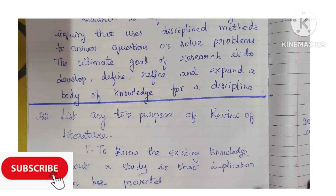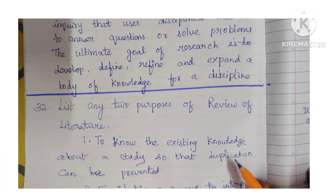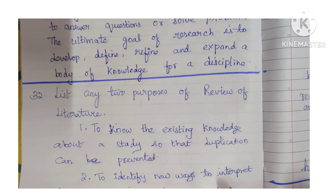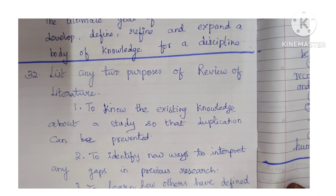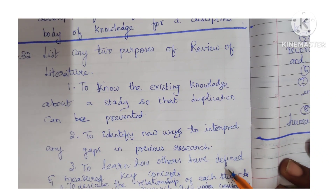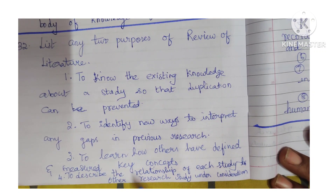Question 32: List any two purposes of review of literature. To know the existing knowledge about your study so that duplication can be prevented. To identify new ways to interpret any gaps in previous research. To learn how others have defined or measured key concepts. To describe the relationship of each study to other research studies under consideration.